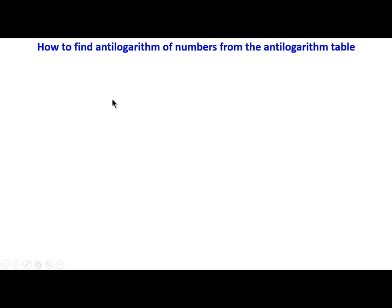Hello, welcome to this tutorial on how to find antilogarithm of numbers from the antilogarithm table. We have to find the antilogarithm of 1.7139. To look for the antilogarithm of this, we look at 7139 from the table.